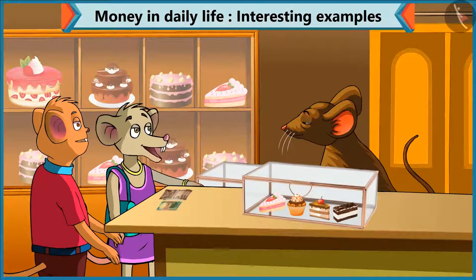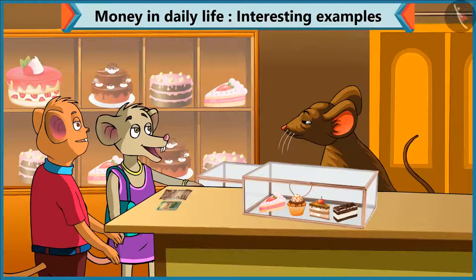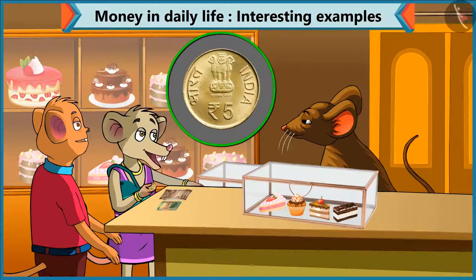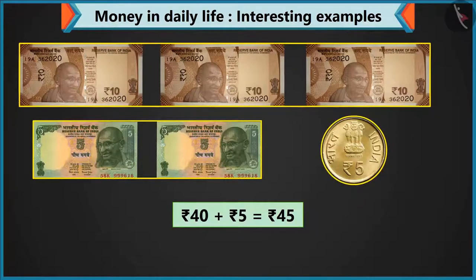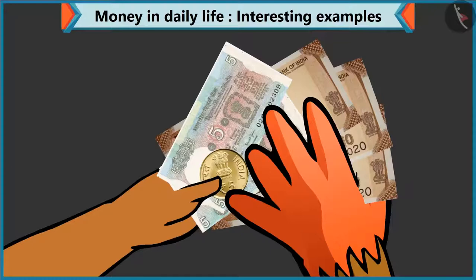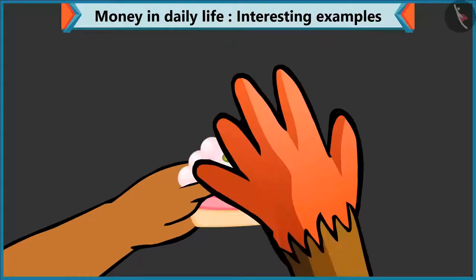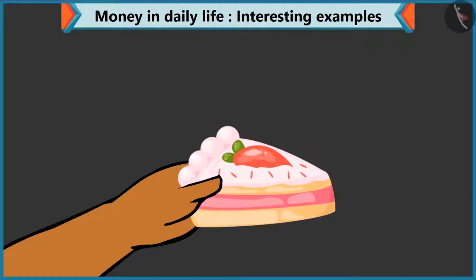But I had only 2 notes of 5 rupees. Chi Chi, you have coins, right? Hey, yes. Take a coin of 5. So now 40 and 5 makes 45 rupees. Take this brother, 45 rupees. Here is your pastry. Thank you.